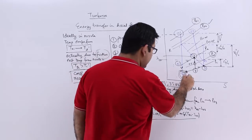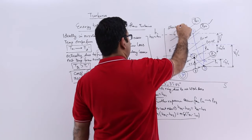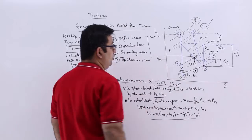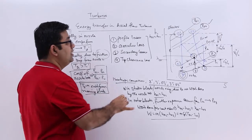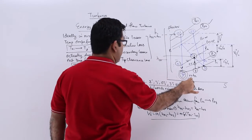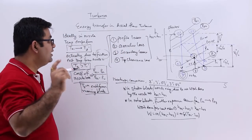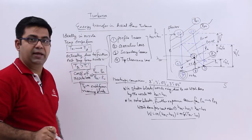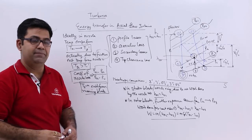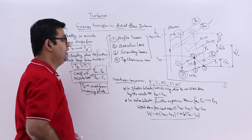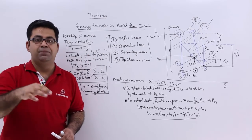These four types of losses — profile loss, annulus loss, secondary losses, and tip clearance loss — ensure that there is some energy loss when the steam enters the rotor blades. This is the entrance to the stator blades and this is the exit from the rotor blades. There is a loss that happens in this journey from stator to rotor.